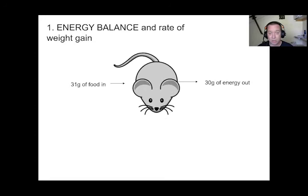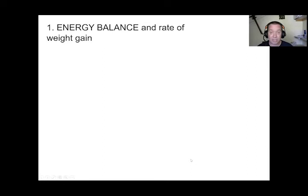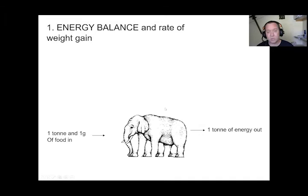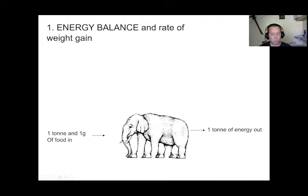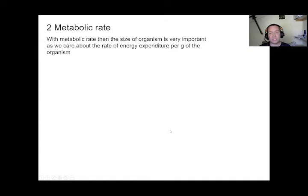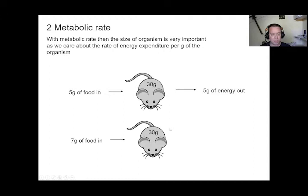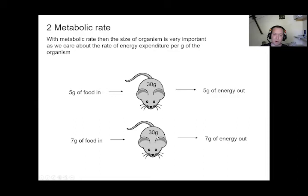The rate of weight change will be quite radically different as a proportion of body size, but that's really a technical issue. For metabolic rate, the size of the organism is extremely important, as we care about the rate of energy expenditure per gram. By just altering the environmental temperature, a 30-gram mouse can go from about 2.5–3 grams of chow up to easily 7 grams, really ramping up metabolic rate.